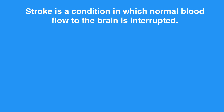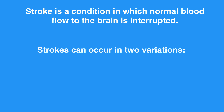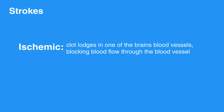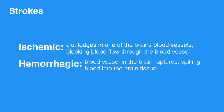Stroke is a condition in which normal blood flow to the brain is interrupted. Strokes can occur in two variations: ischemic and hemorrhagic. In ischemic stroke, a clot lodges in one of the brain's blood vessels, blocking blood flow through the blood vessel. In hemorrhagic stroke, a blood vessel in the brain ruptures, spilling blood into the brain tissue.